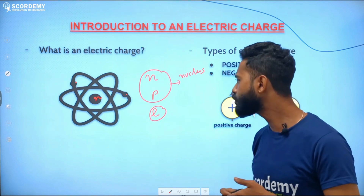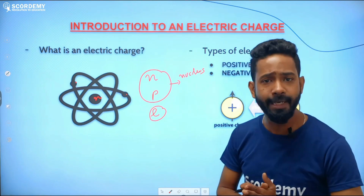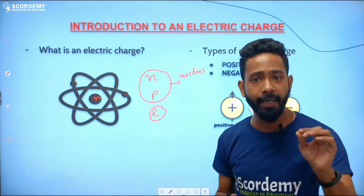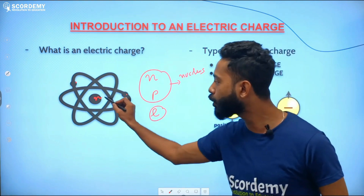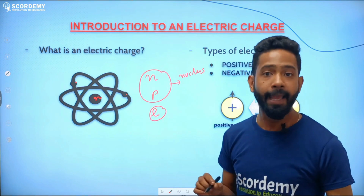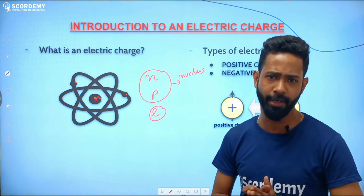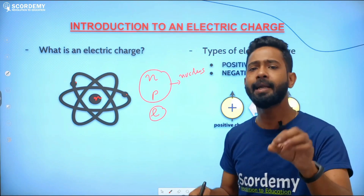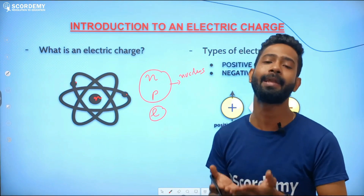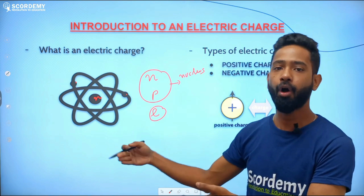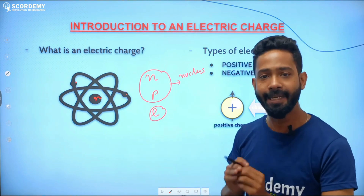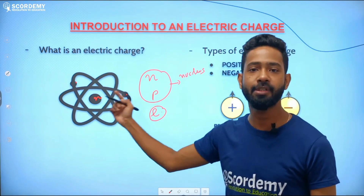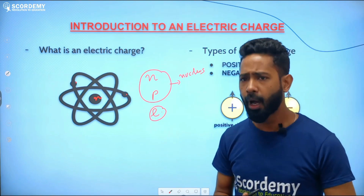Now why can't protons take part in forming electric charges? Protons can take part in forming positive electric charges, but for a proton to do so, the nucleus must break down, and breaking down the nucleus requires an enormous amount of energy — nuclear energy. That much energy to get electricity from protons is not economical. That is why our main emphasis is on the motion of electrons, since electrons can be easily knocked out from their shells.